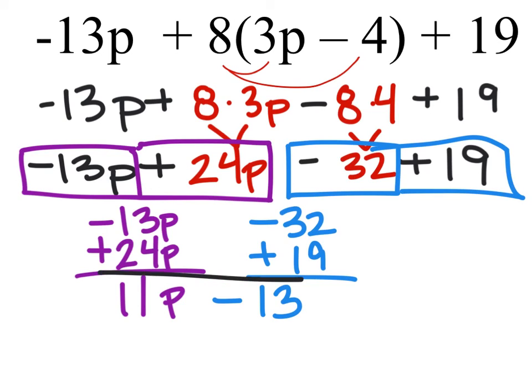So we have two terms here now, one with a p, or being multiplied by p, and one that is not. So they are unlike terms. We can't combine these any further, and this is complete.